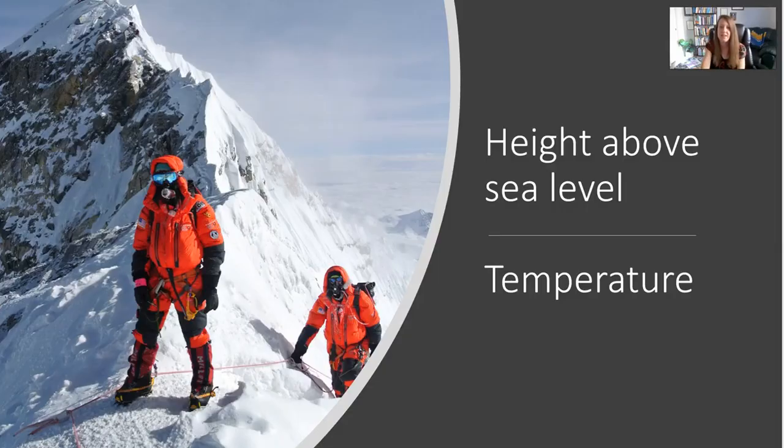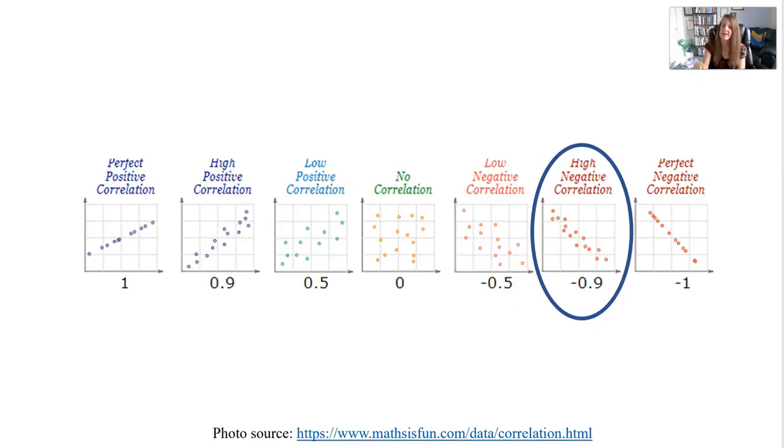What about height above sea level and temperature? Well this would be a negative correlation, as you go up in elevation the temperature goes down.